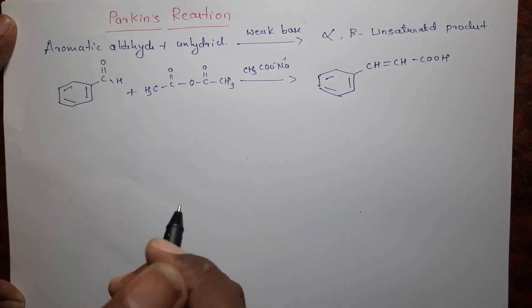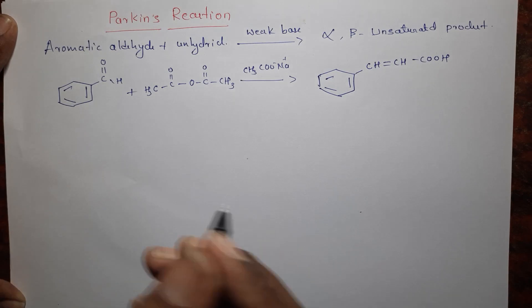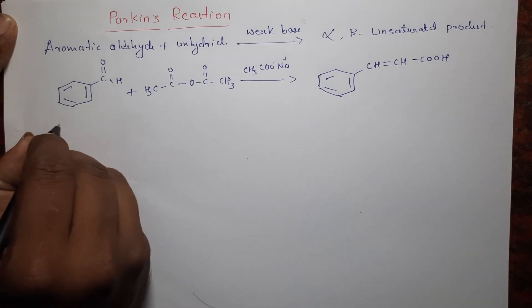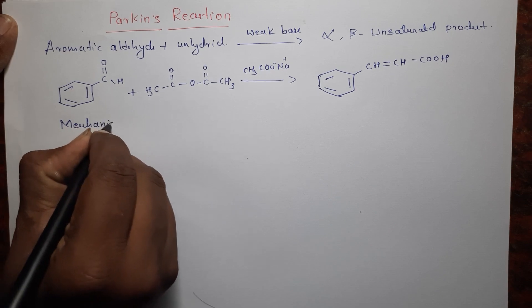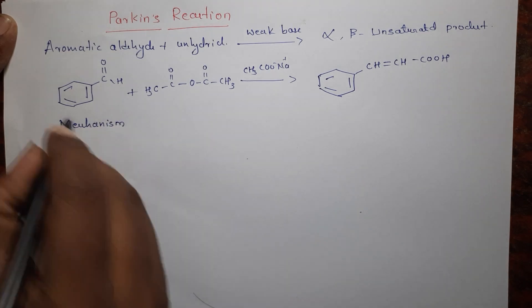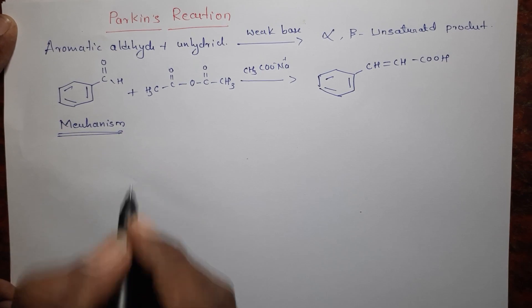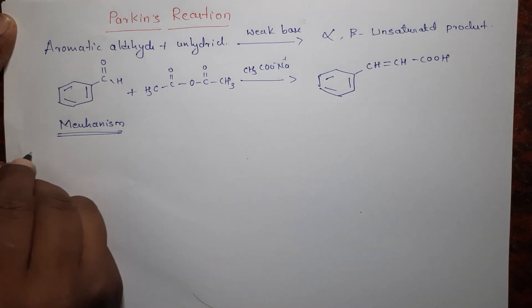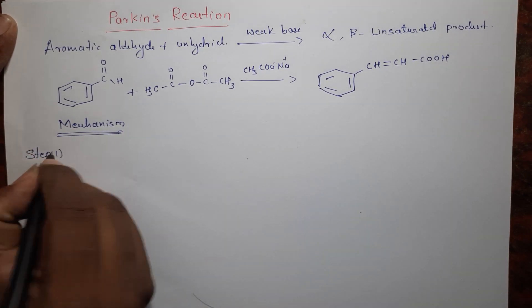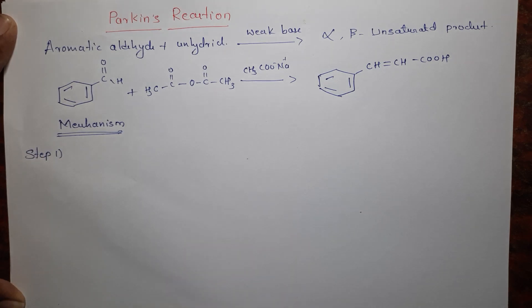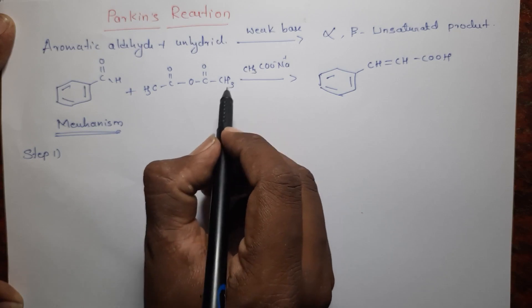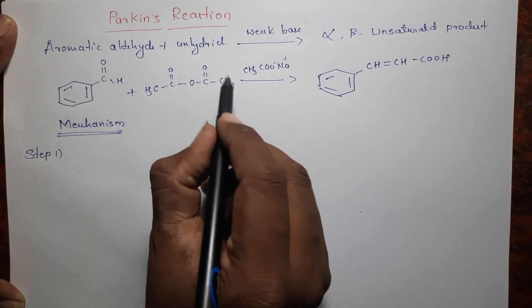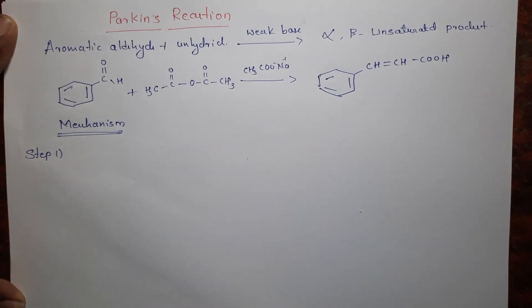In Perkins reaction, the mechanism involves five steps. In step one, the weak base abstracts the acidic proton from the acidic anhydride.